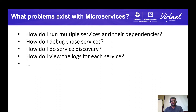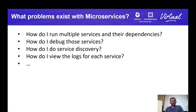How do I debug those services? When running one service, it's pretty easy to attach a debugger. But what if I'm running two or three services? How do I get that whole end-to-end working so I can debug while running locally? Also, how do I do service discovery? If I have services A, B, and C — or a backend, frontend, and cache — how do I get the address of those services on my local machine?